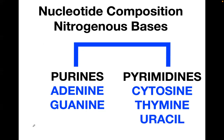Under the nitrogenous bases, we have purines and pyrimidines. The purines are adenine and guanine, while the pyrimidines are cytosine, thymine, and uracil. Uracil is only encountered in RNA.